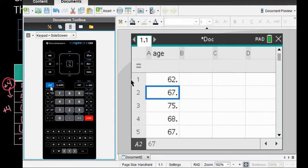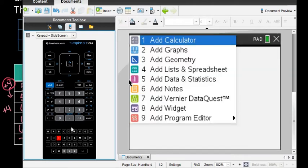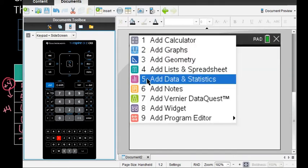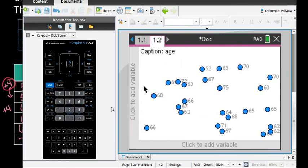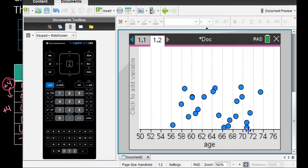For the next step, hit ctrl and i to insert a data and statistics screen, option five. I'll click down here to add a variable and add the variable age.